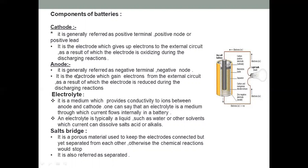Next, the anode. The anode is the negative terminal, or negative lead. It is generally referred to as the negative terminal or negative node. It is the electrode which gains electrons from the external circuit, as a result of which the electrode is reduced during the discharge reaction.